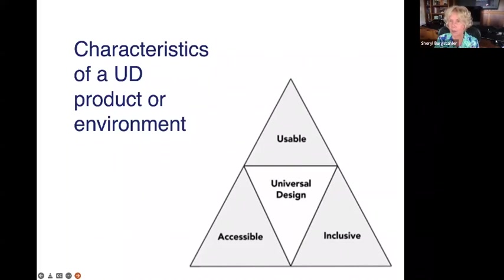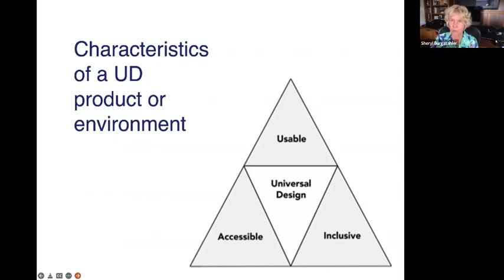Universal design products are both usable as well as accessible, and then inclusive. Ideally, everyone's using the same product. With the name tag, ideally rather than giving people a choice where they have to choose one, you give them a product that's flexible so they can make different decisions each day.